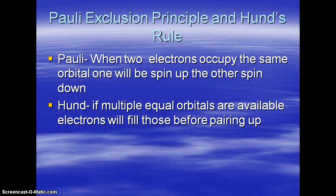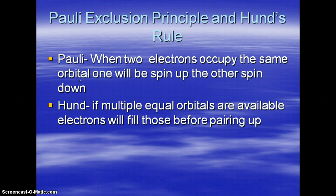The Pauli exclusion principle and Hund's rule are two other important ideas related to electron configuration. The Pauli exclusion principle says that when you have two electrons in the same orbital, they have opposite spins — one spins up, the other spins down. That's because they have a negative charge, so these opposite spins allow them to occupy the same orbital — essentially the same space — without interfering with one another, without those repulsive forces.